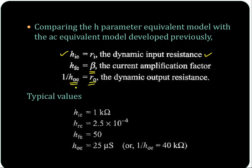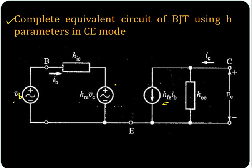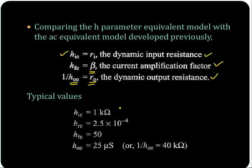You can note one thing — the only difference from the previous circuit is this. You have this source HRE times VC when you consider the H parameter equivalent, and that depends on the output voltage VC.